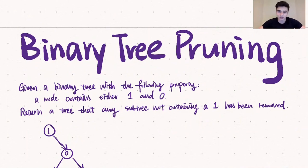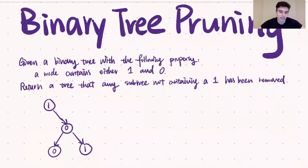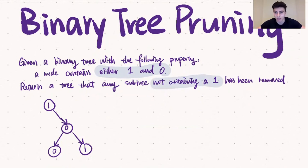For today's algorithm we're going to be discussing the LeetCode question binary tree pruning. The question statement is: you're given a binary tree with the following property — every node in the tree either contains a zero or a one. The task is to remove all subtrees that contain only zeros. In the bottom left corner we have an example tree that might be passed into this algorithm.